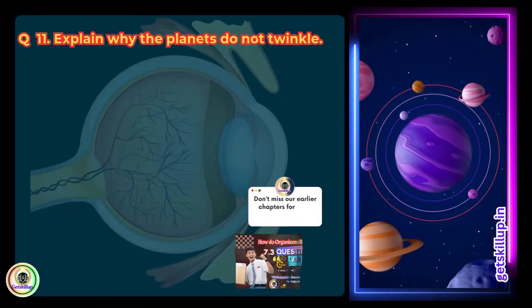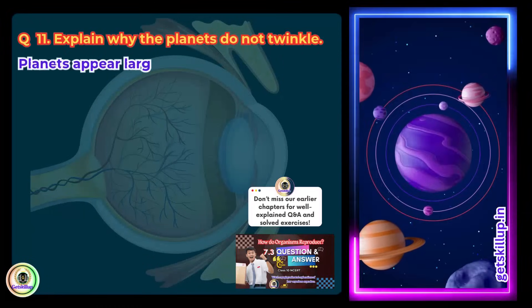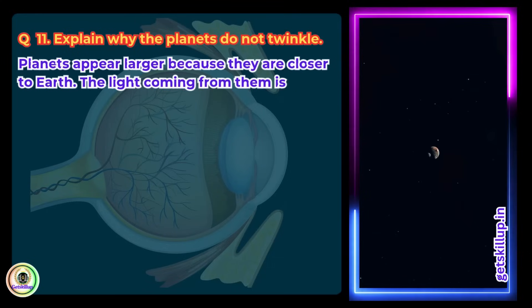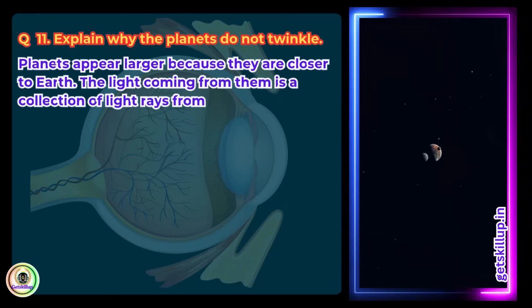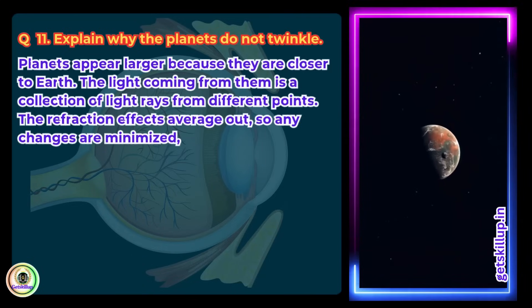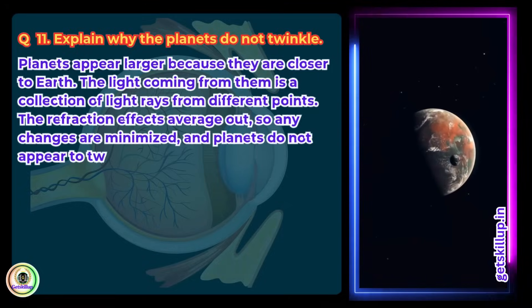Question 11. Explain why the planets do not twinkle. Answer: Planets appear larger because they are closer to Earth. The light coming from them is a collection of light rays from different points. The refraction effects average out, so any changes are minimized and planets do not appear to twinkle.